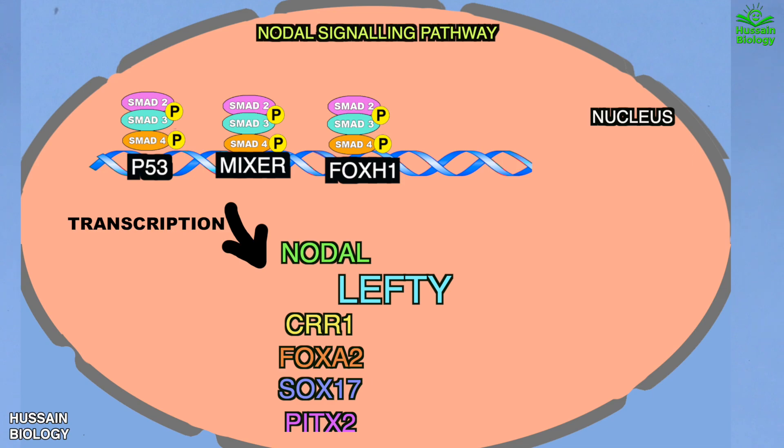This is how the nodal signaling pathway mediates mesoendoderm induction, patterning of the nervous system, and determination of the dorsal-ventral axis in vertebrates during embryogenesis.